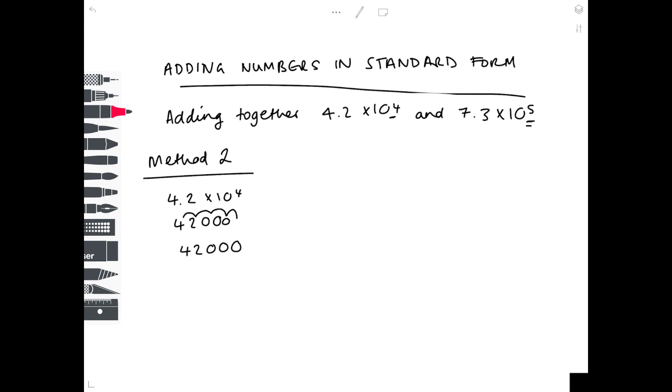So 4.2 times 10 to the 4 is actually the same as 42,000. 7.3 times 10 to the 5, again make it an ordinary number. We've got 1, 2, 3, 4, 5, yep that's correct. Now it's a straightforward addition sum, so add those two numbers together.